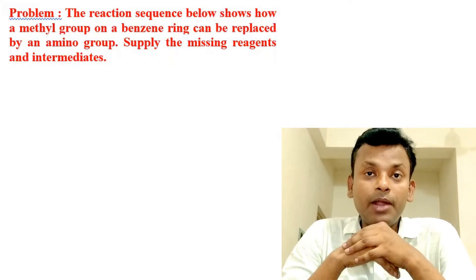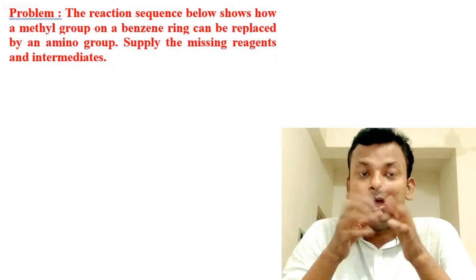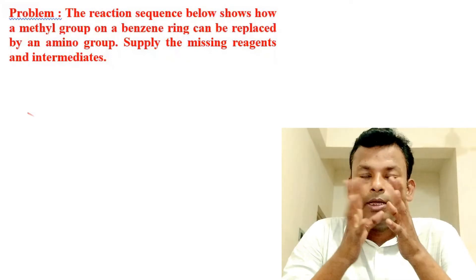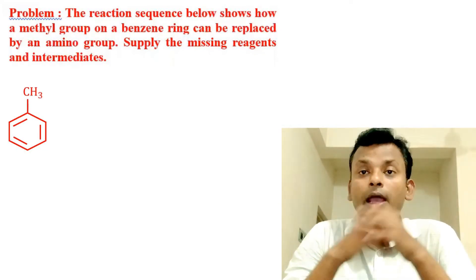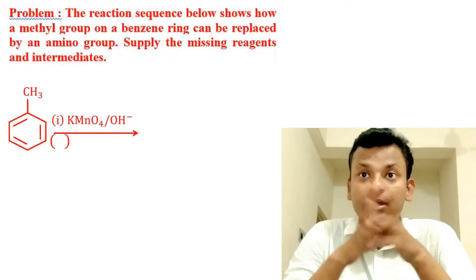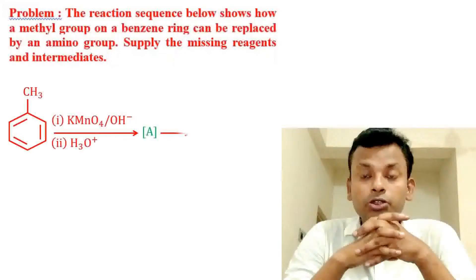Supply the missing reagents and intermediates. Toluene reacts with alkaline KMnO4 and hydrolysis gives A. A reacts with B to form benzoyl chloride.